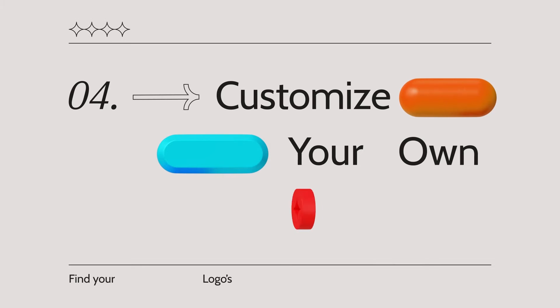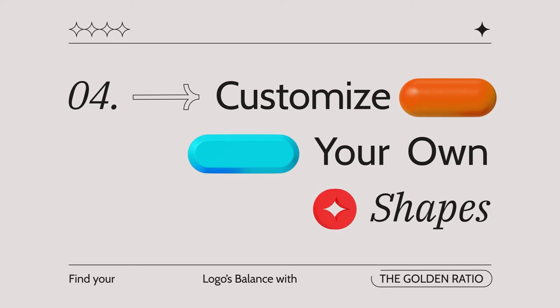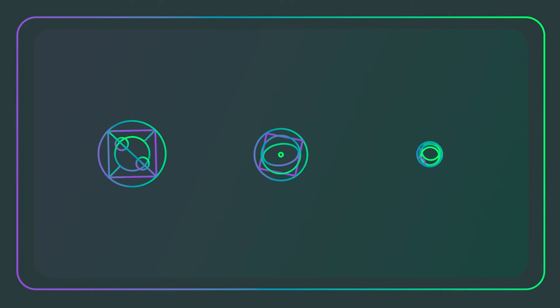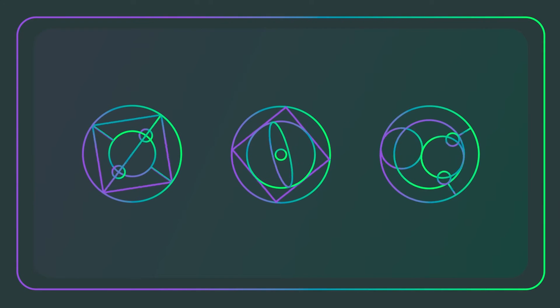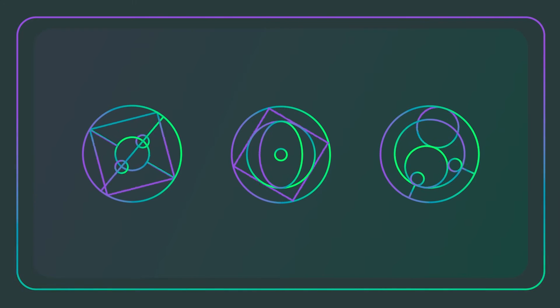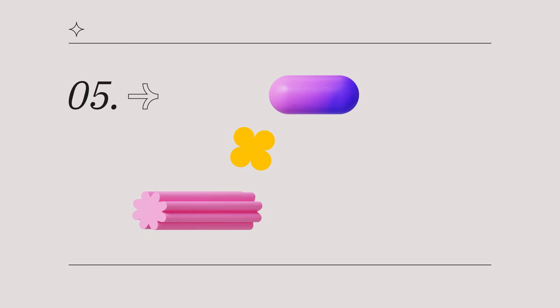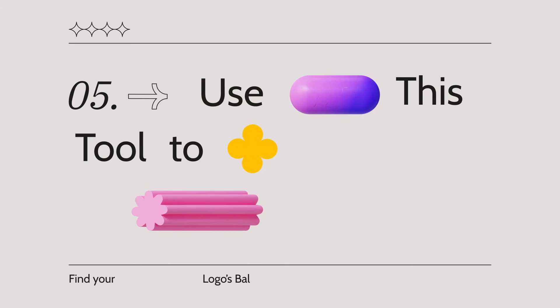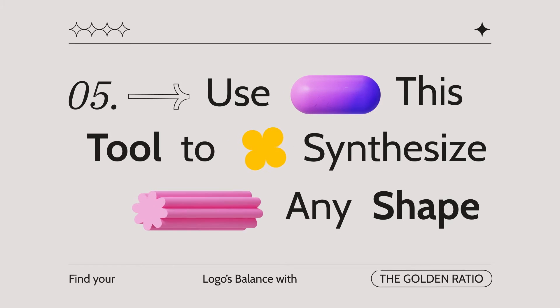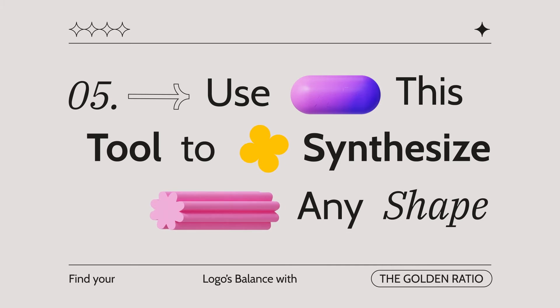Customize your own shapes. Take the elements of your friend Fibonacci's spiral and let the magic happen. Use this tool to synthesize any shape — really, any shape can be simplified.